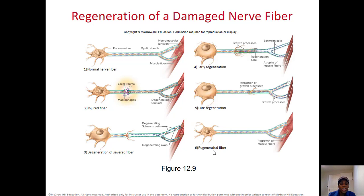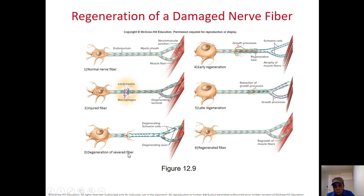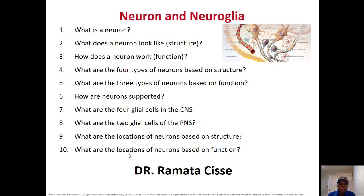How do neurons regenerate or degenerate? If the neuron is injured at the cell body, it will not survive. But if injured at the axon terminal, the part after the injury toward the axon terminal will not survive, but the cell body can regenerate and produce a new axon terminal to attach to other cells.